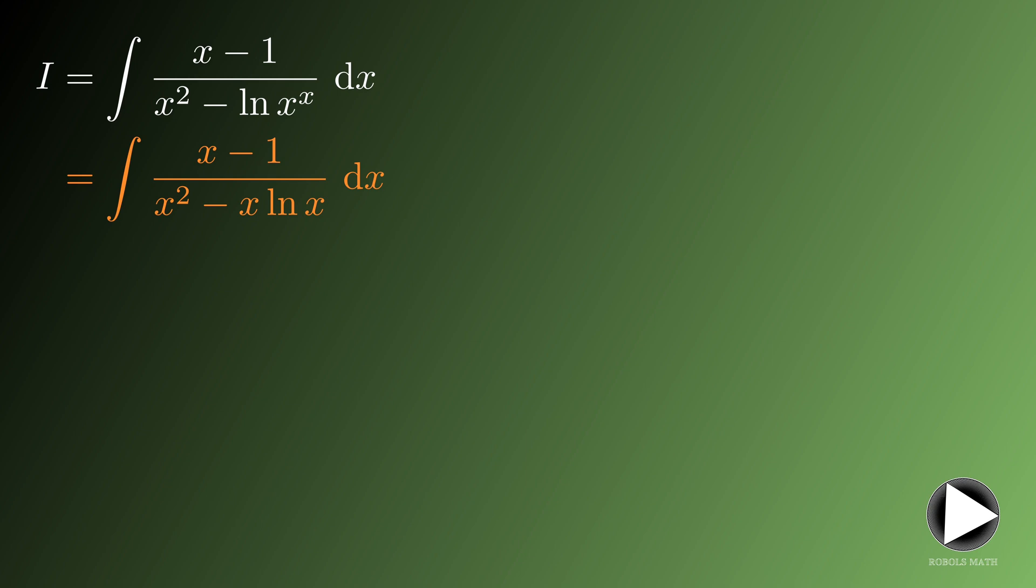Note that this denominator has a common factor of x, which means that we can factor it out to get x times the quantity of x minus ln of x.